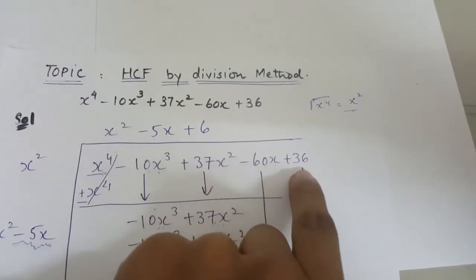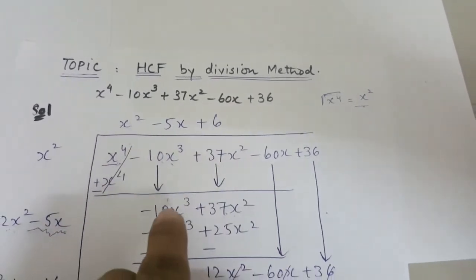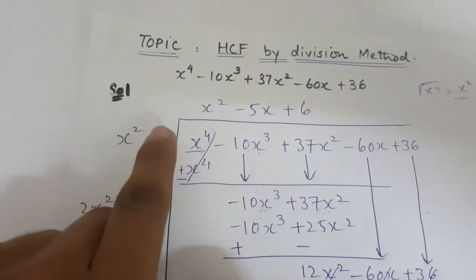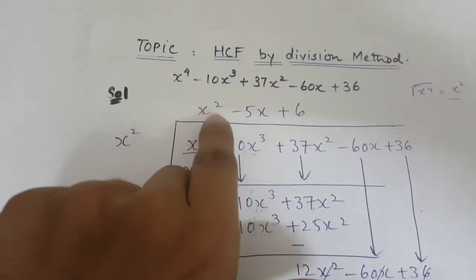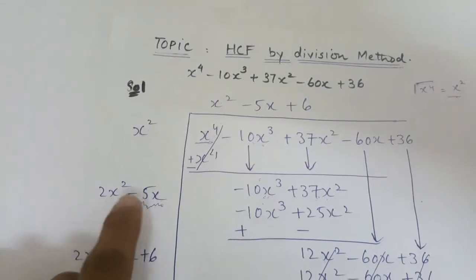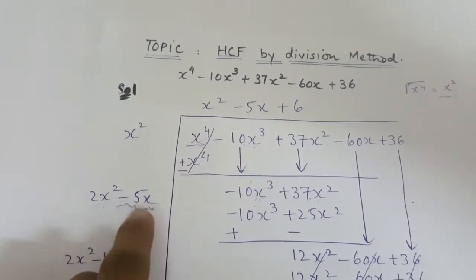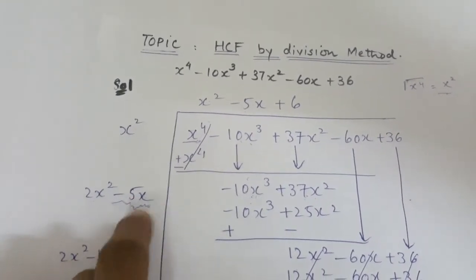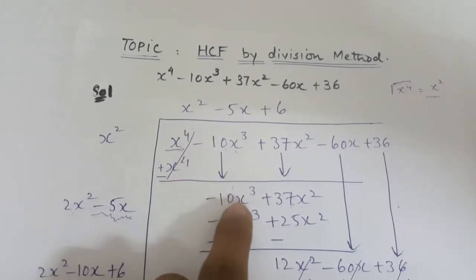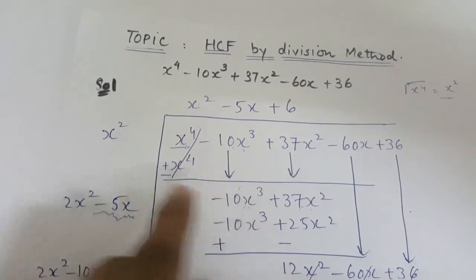We are left with four terms: -10x³ + 37x² - 60x + 36. I'll write it pairwise, so the first pair is -10x³ + 37x². The next step is to add the two x² terms: x² + x² gives us 2x². Then the next term is -5x — this explains the -10x³. We divide -10x³ by the first term 2x², which gives us -5x.